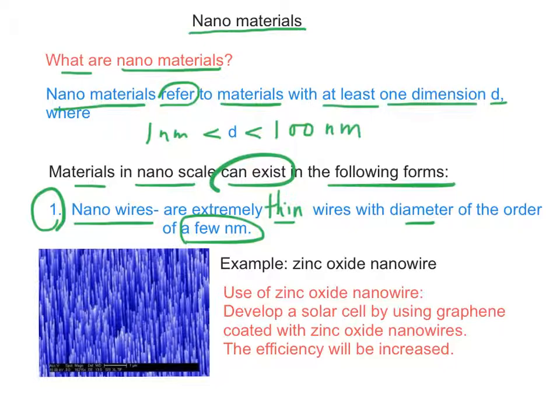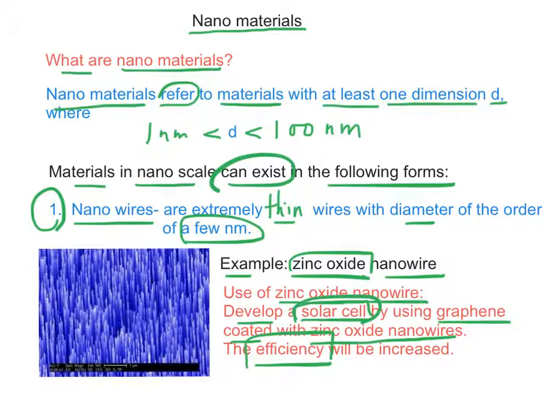Examples of nanowires are zinc oxide nanowires. The use of zinc oxide nanowires is to develop a solar cell by using graphene coated with zinc oxide nanowires. In this case, the efficiency of the solar cells will be increased.